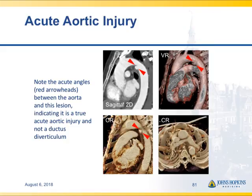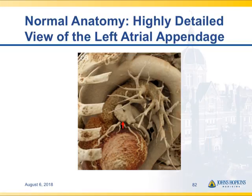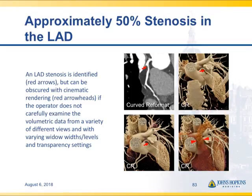When we talk about acute aortic injury, here the acute angles between the aorta and the lesion indicate a true injury and not a ductus diverticulum. The soft tissue, the outpouching, and visualizations on cinematic rendering show this well. Here I'm showing the ability to rotate the image — look at the detail of the left atrial appendage, very nicely shown, and the LAD and circumflex coronary arteries also well shown. I'm not saying cinematic rendering is what you should use for coronary artery stenosis, but you can see the area of narrowing in the proximal LAD very nicely.